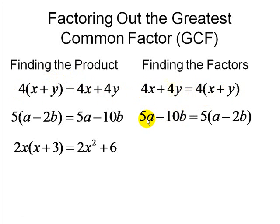Let's try this one, 5a minus 10b. The greatest common factor is 5, so we factor out the 5. That leaves a, and this leaves minus 2b. So 5 is a factor, and a minus 2b is a factor.